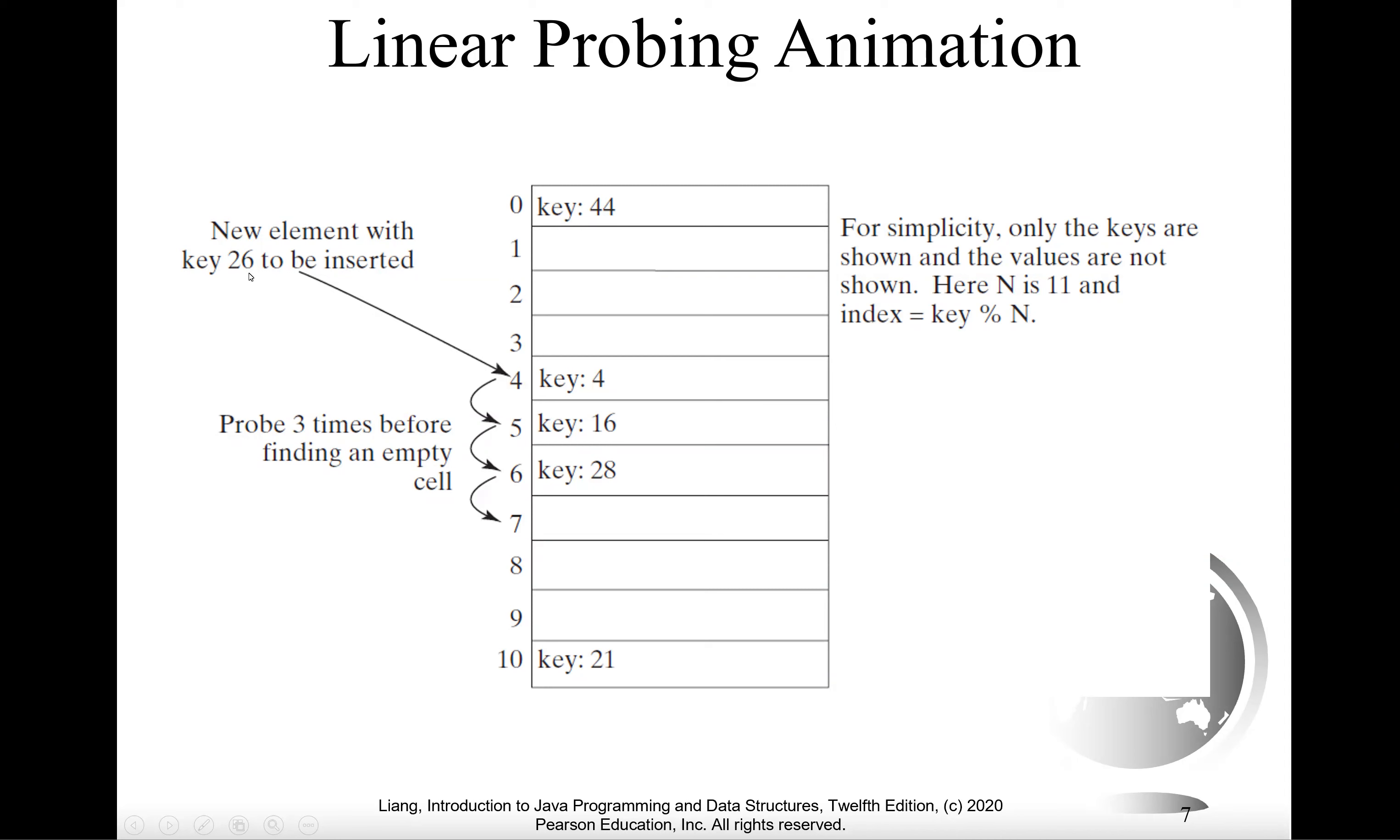Now let's insert 26. 26 remainder 11 is 4, but it's already occupied. So the linear probing is you're going to find the next available location until here is available. So you're going to put 26 right here. This is called linear probing.